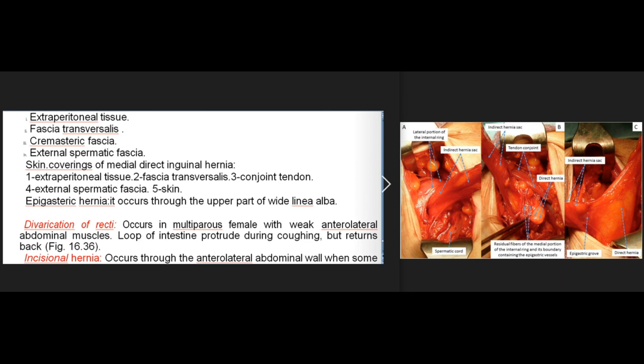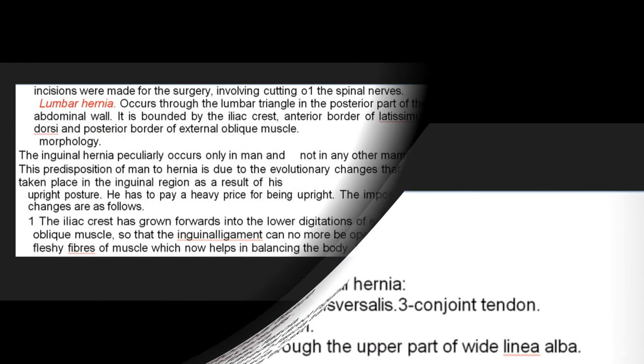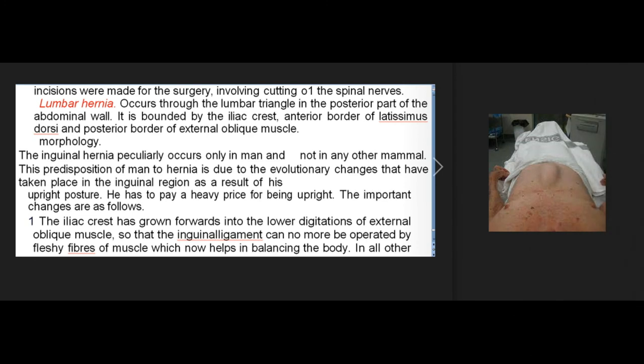Epigastric hernia occurs through the upper part of the wide linea alba. Diastasis recti occurs in multiparous females with weak anterolateral abdominal muscles; a loop of intestine protrudes during coughing but returns back. Incisional hernia occurs through the anterolateral abdominal wall when incisions were made for surgery involving cutting of the spinal nerves. Lumbar hernia occurs through the lumbar triangle in the posterior part of the abdominal wall, bounded by the iliac crest, anterior border of latissimus dorsi, and posterior border of external oblique muscle.